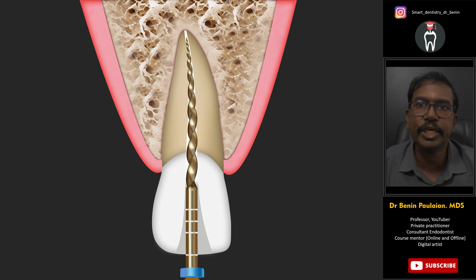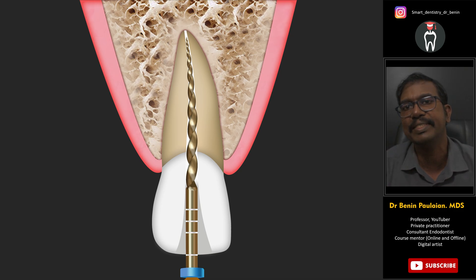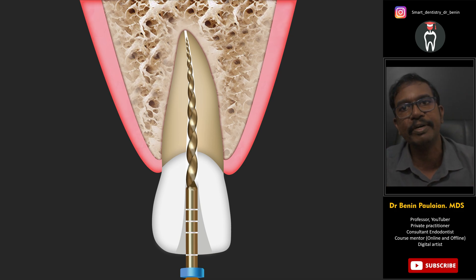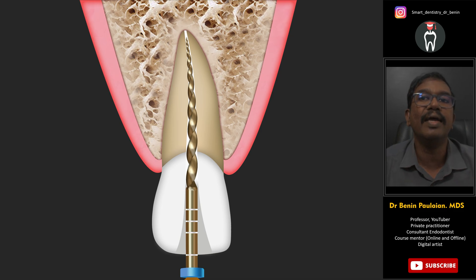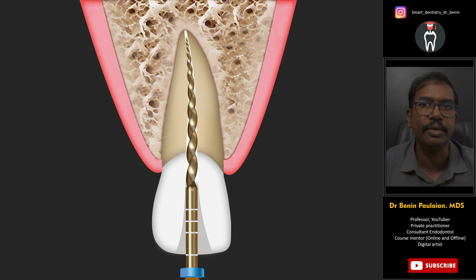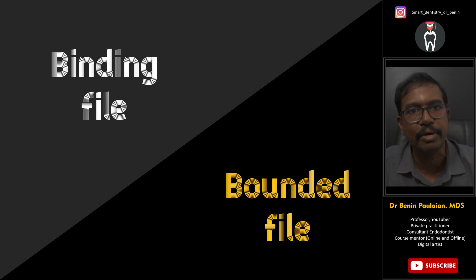In order to avoid that, we have to do a sequential canal preparation. For example, in case of constant taper files we can use an 8% taper file followed by 6% followed by 4%. This sequential canal preparation will prevent the file from getting bounded. At the same time, progressive taper files like ProTaper files are designed in a way that they will not get bounded inside the root canal.